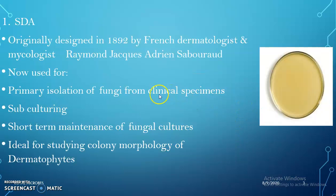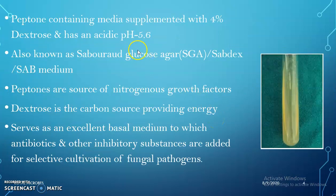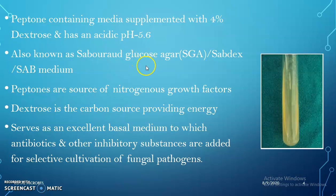First we can see SDA. SDA was originally designed by Raymond Sabouraud in 1892. It is used for the primary isolation of fungus from clinical samples, for subculturing, for short-term maintenance of fungal cultures, and it is an ideal medium for studying colony morphology of dermatophytes. This is the SDA plate. The peptone-containing media is supplemented with 4% dextrose and has an acidic pH of 5.6. The medium is also known as SDA or Sabouraud glucose agar, Sabdex agar, or Sab medium.